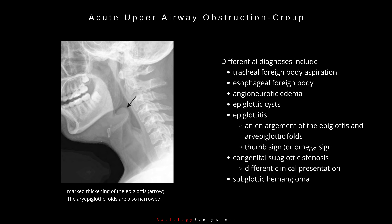Differential diagnoses include tracheal foreign body aspiration, esophageal foreign body, angioneurotic edema, epiglottic cysts, epiglottitis (an enlargement of the epiglottis and aryepiglottic folds, with an appearance named the thumb sign or omega sign, usually in older children), congenital subglottic stenosis, and subglottic hemangioma.